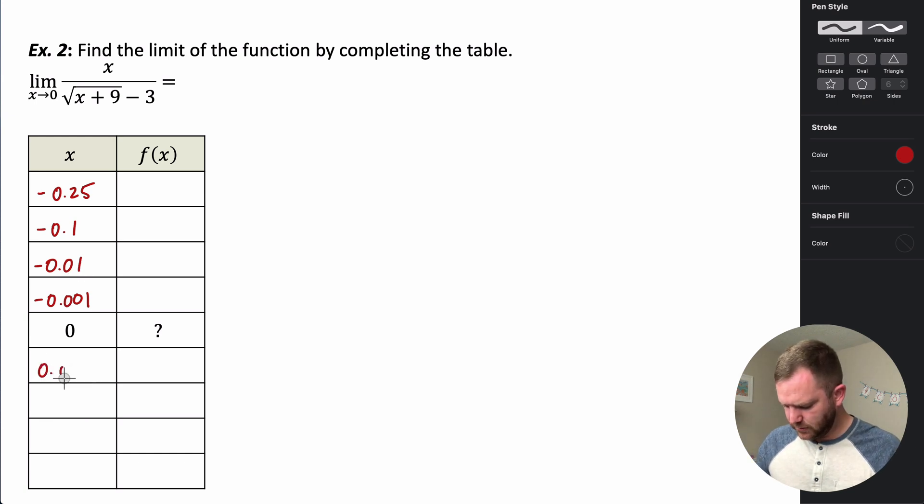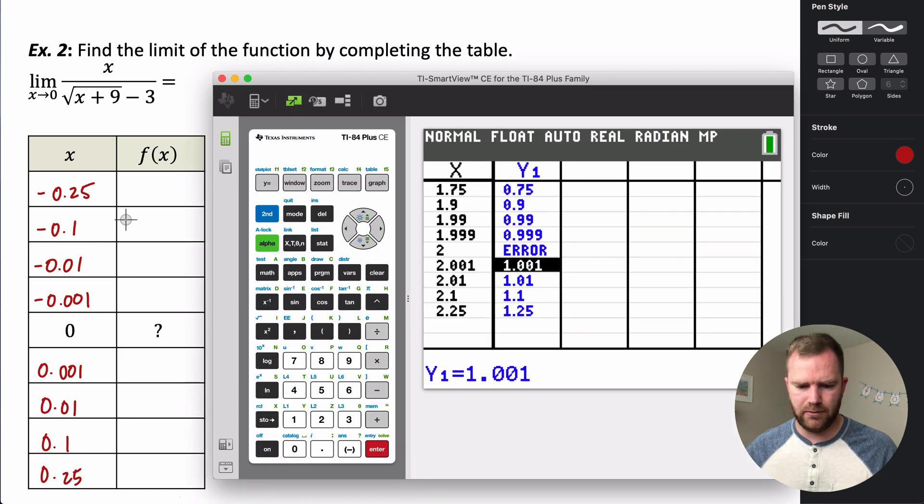And then I'm going to use some symmetry for the numbers that I pick on the positive side and just use these. So those are the numbers that I'm going to end up using in my table.